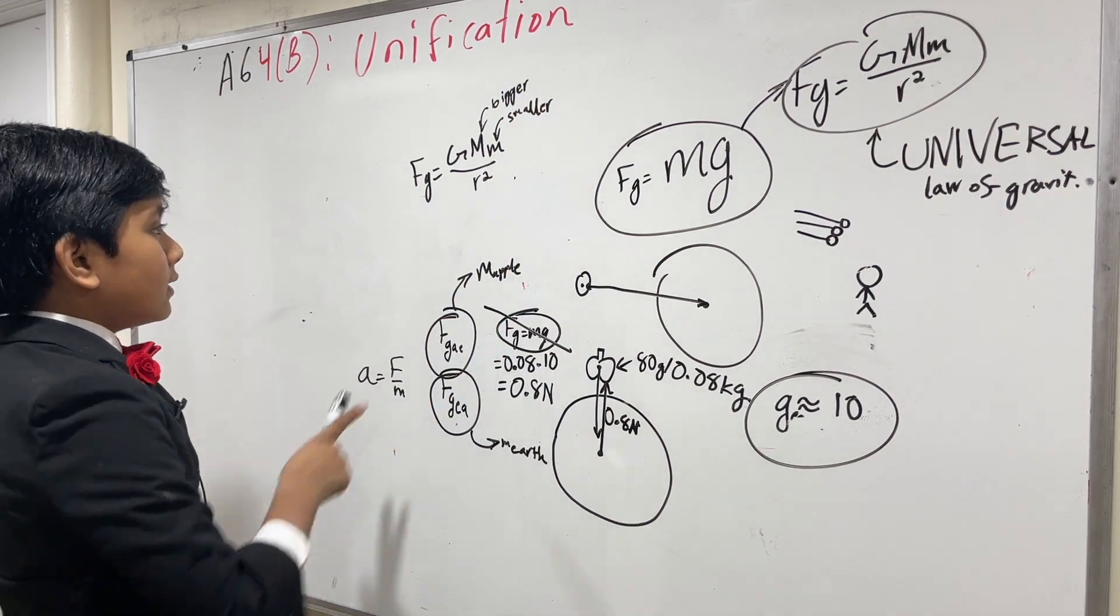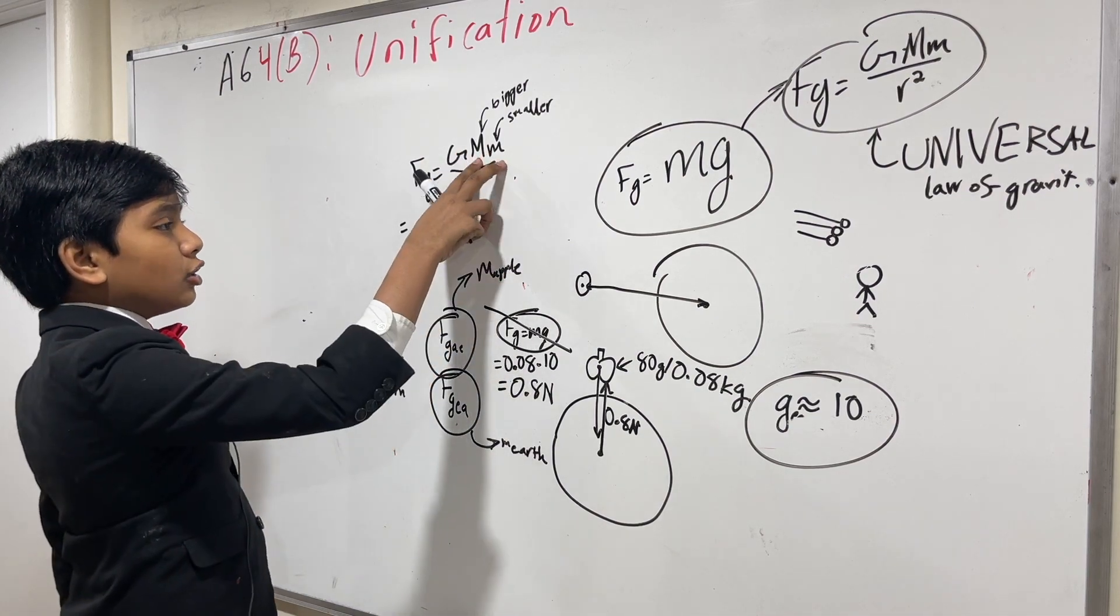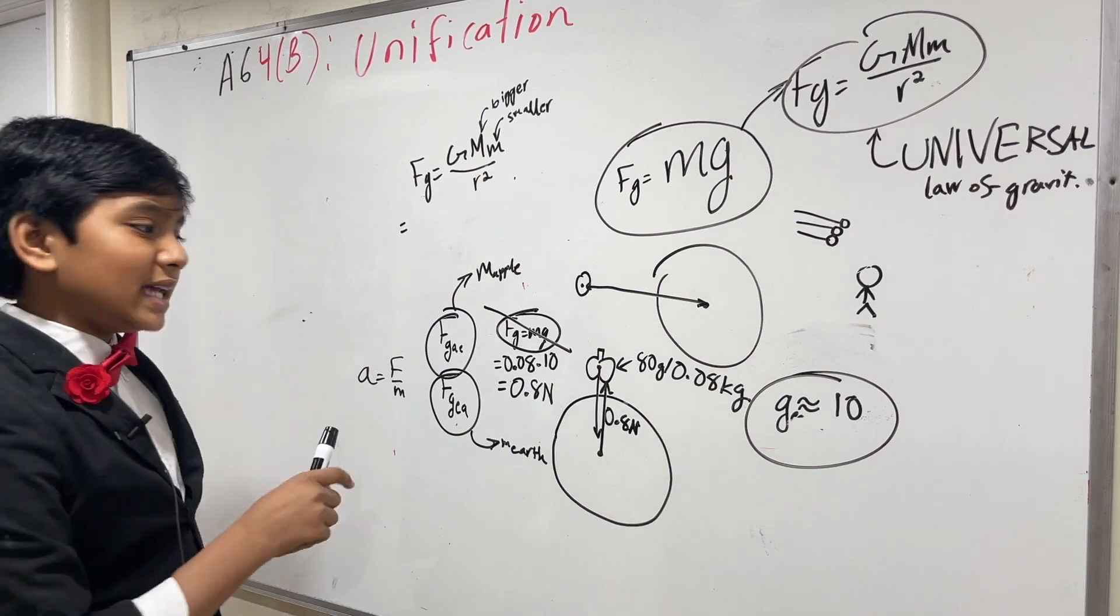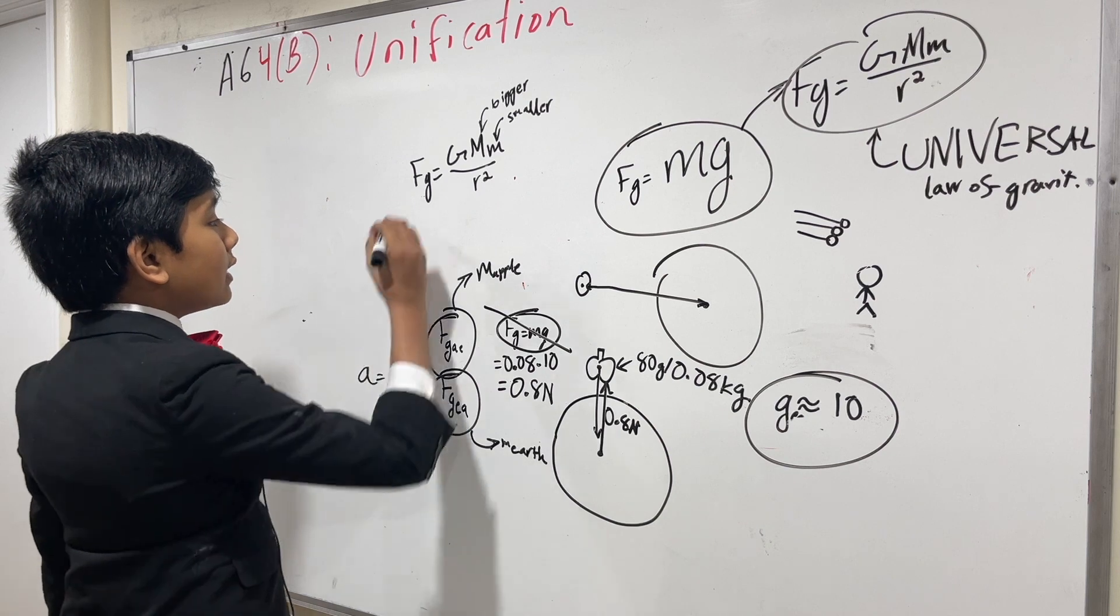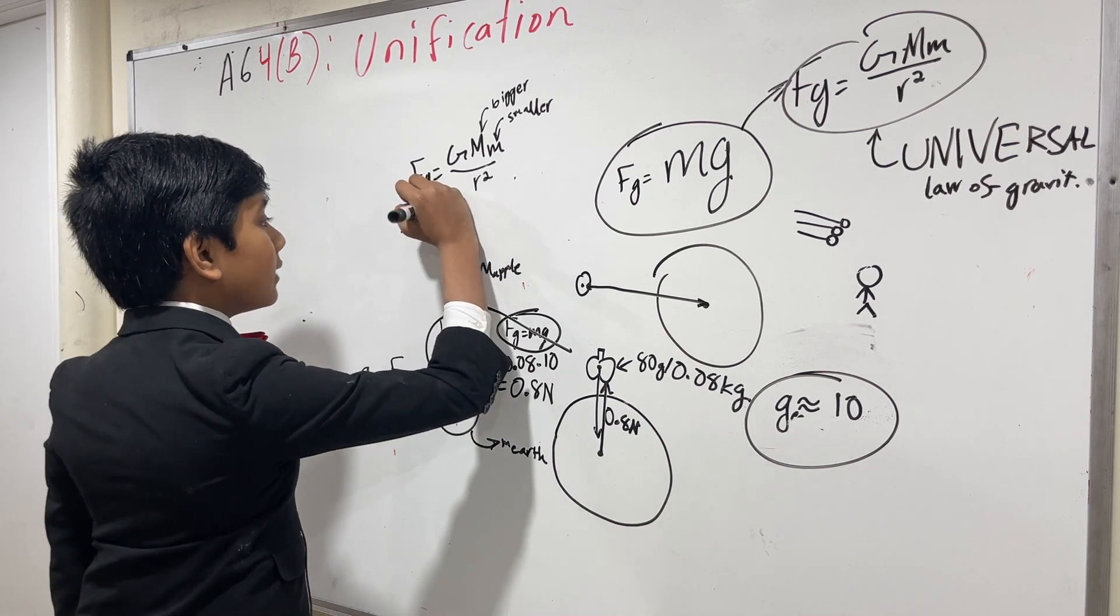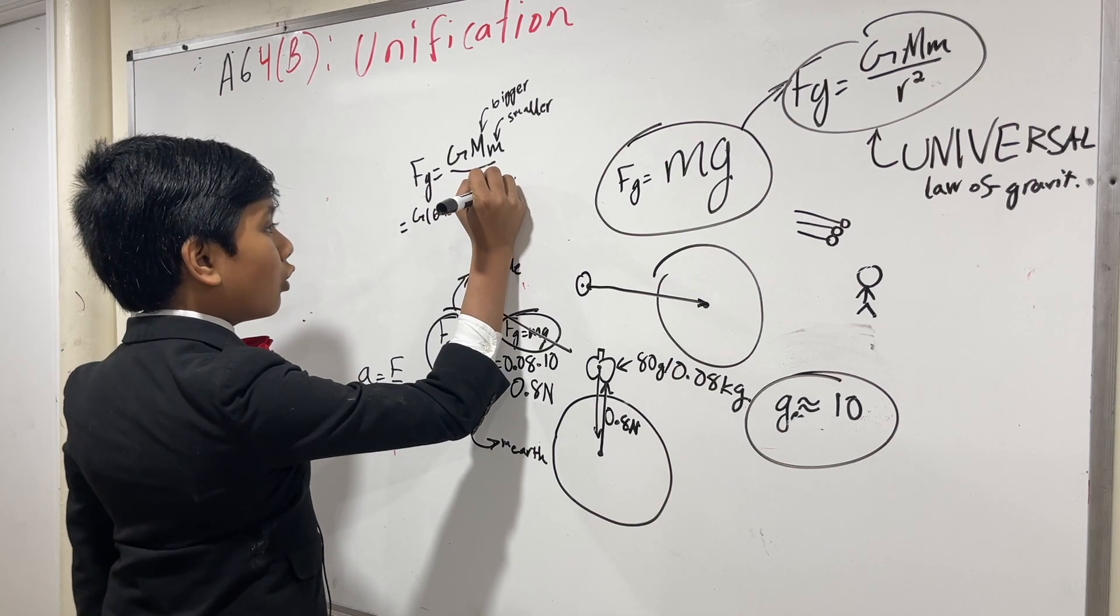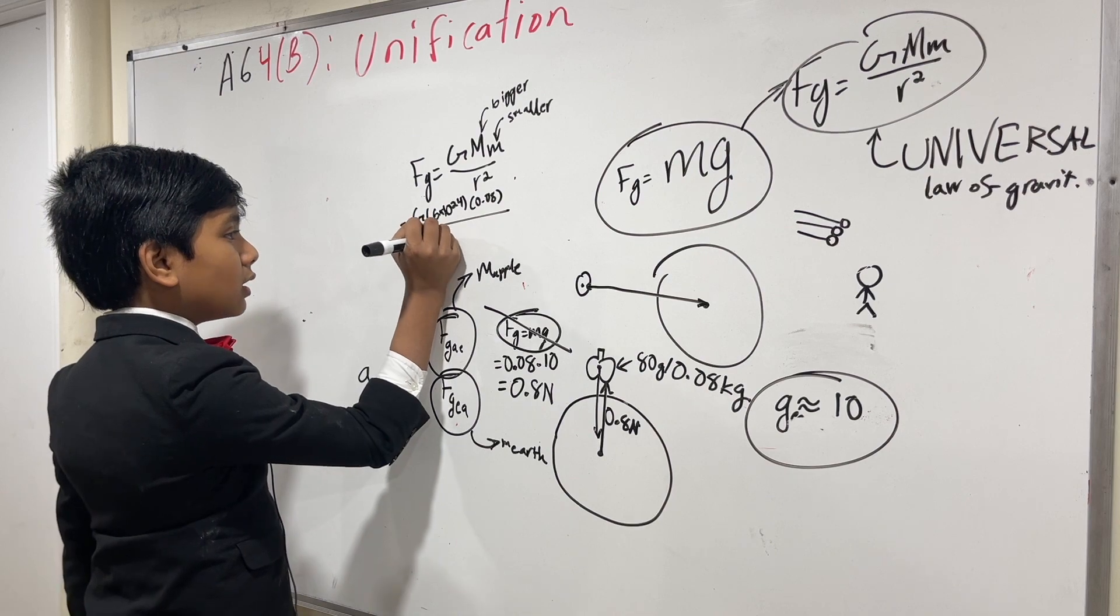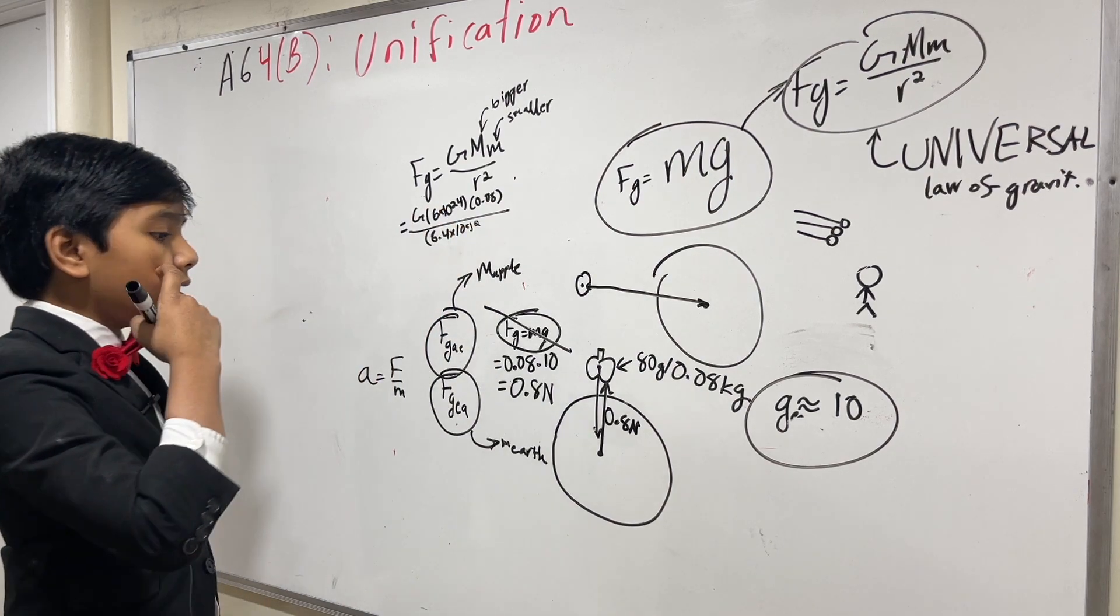So, that means that Fg, no matter the placement of the objects, will be the same for this two-body system. So, I mean, we have g times the mass of the Earth times the mass of the object over the distance squared. So, 6.4 times 10 to the sixth squared.